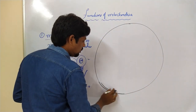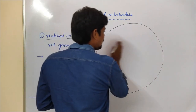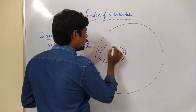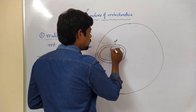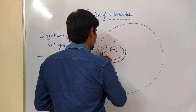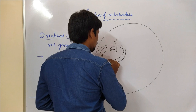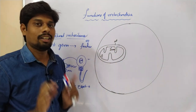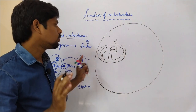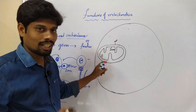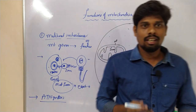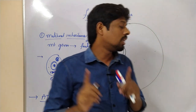Assume this is a cell containing mitochondria. Mitochondria have two membrane structures — outer and inner membrane. The entire surrounding area is the cytoplasm. Whatever food we take is finally converted into the single monomer glucose.